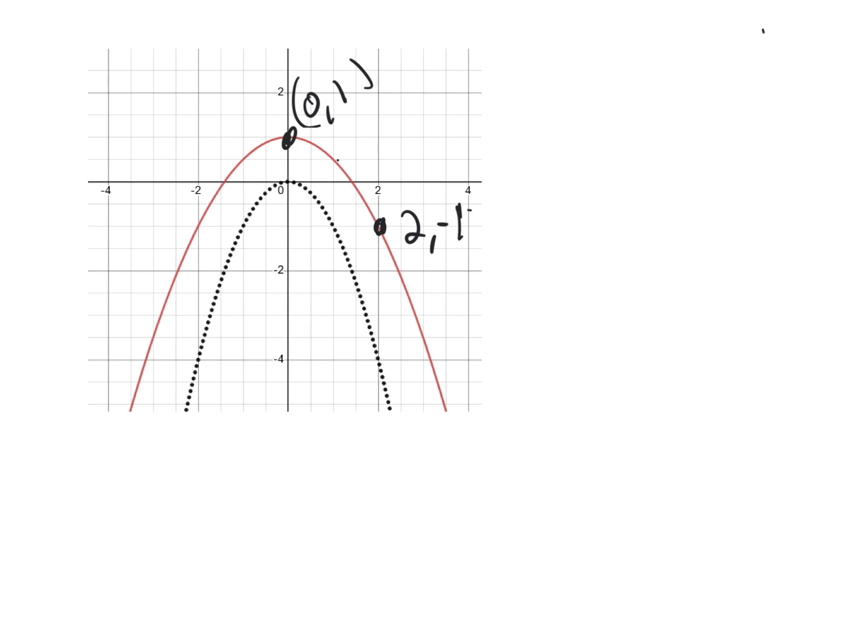So with this graph, I've tried this three times, and I keep messing it up because of the scale. So I see this black dotted graph is negative x squared. I see when I go over 1, I'm at negative 1. I go over 2, I'm down at negative 4. So that tells me this graph has an A of negative 1.